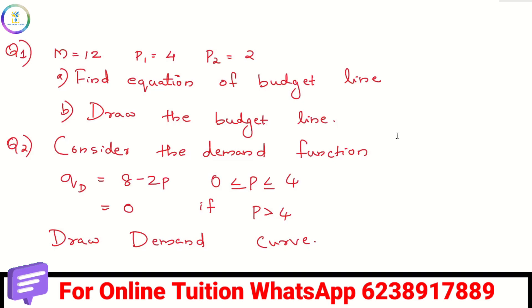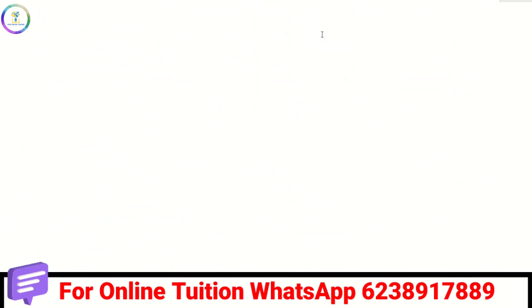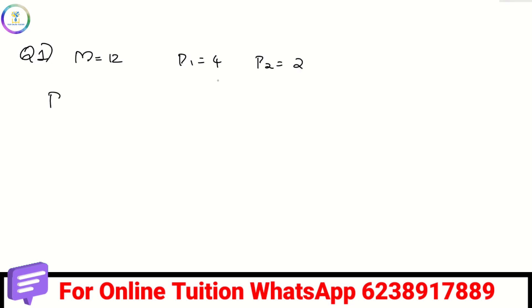We need to find the budget line equation. Given M equals 12, P1 equals 4, and P2 equals 2, so we find the budget line equation.